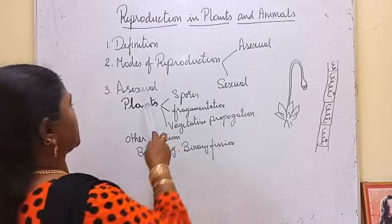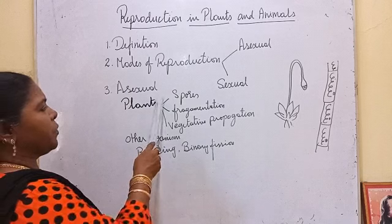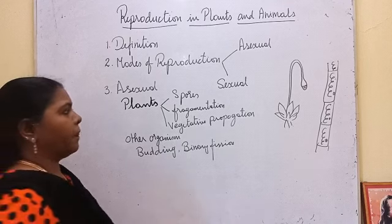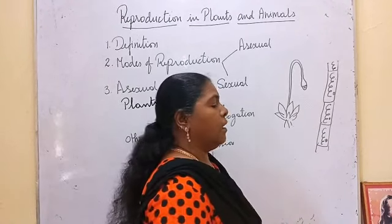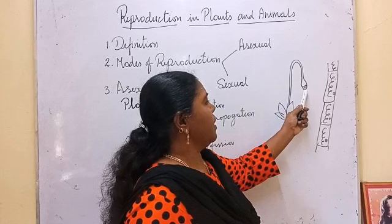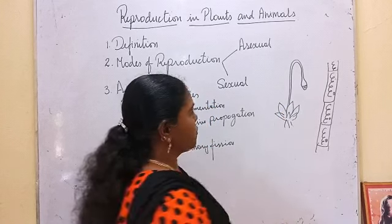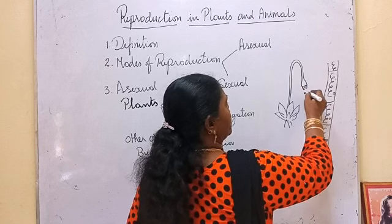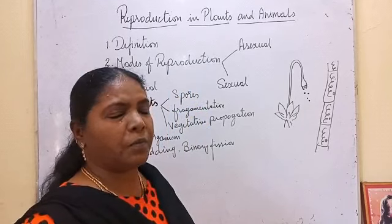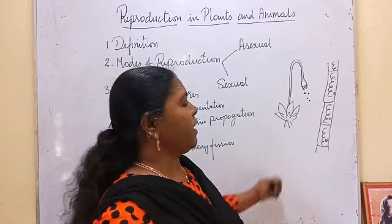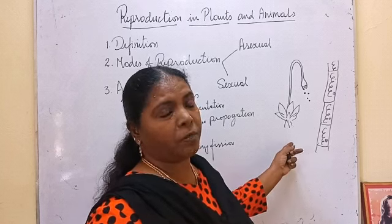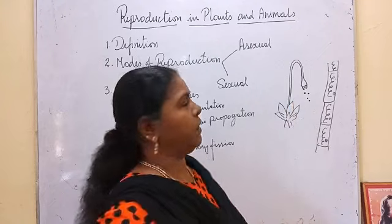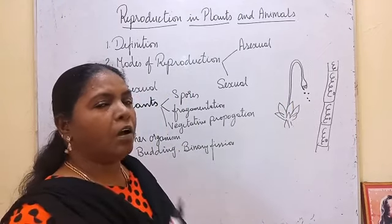Asexual reproduction in plants takes place by spores, fragmentation, and vegetative propagation. Taking the moss plant as an example for spores: it produces a sporangium which contains spores. When the capsule is filled with spores, it breaks and liberates them. When the spores reach the substrate, they germinate into a new plant. We can also see this in fungi, but we are taking moss plant as the example here. Only spores are produced, not seeds.